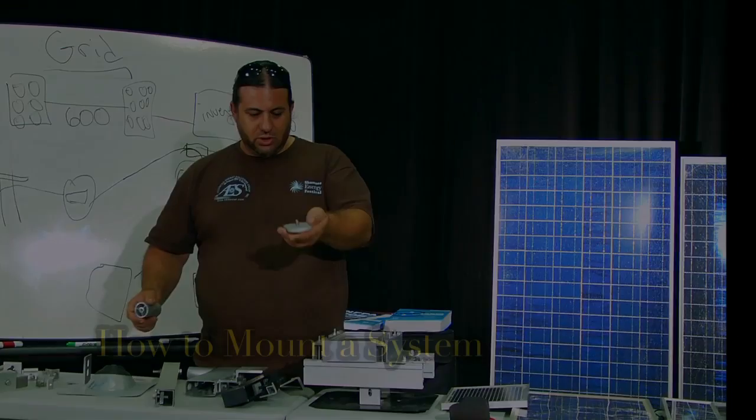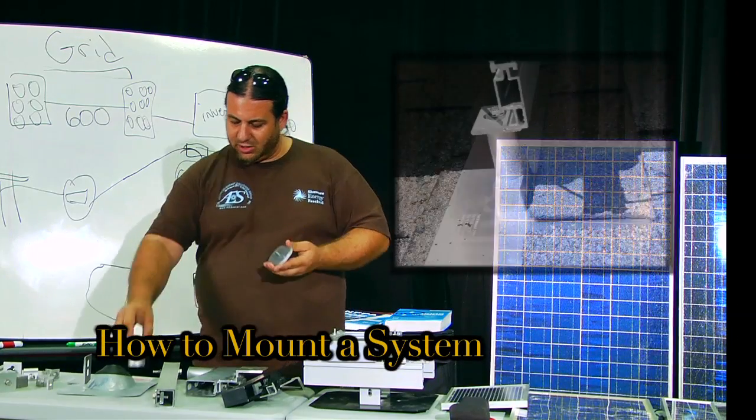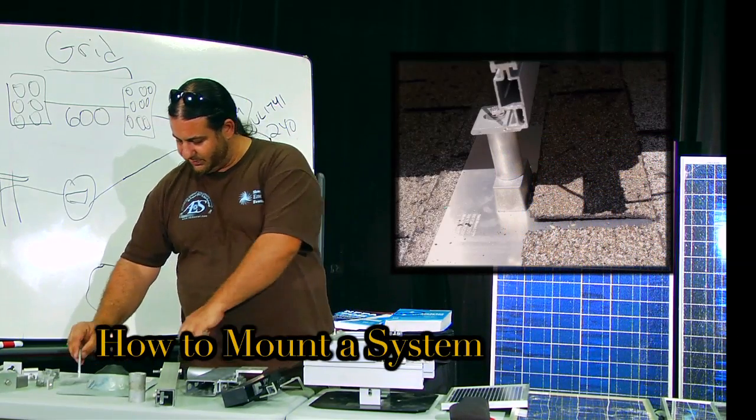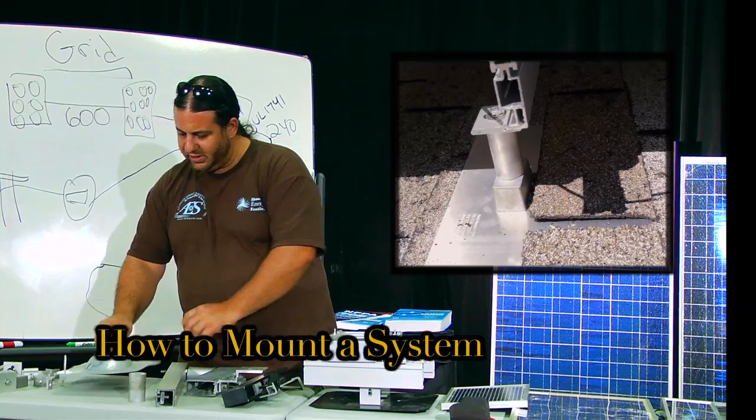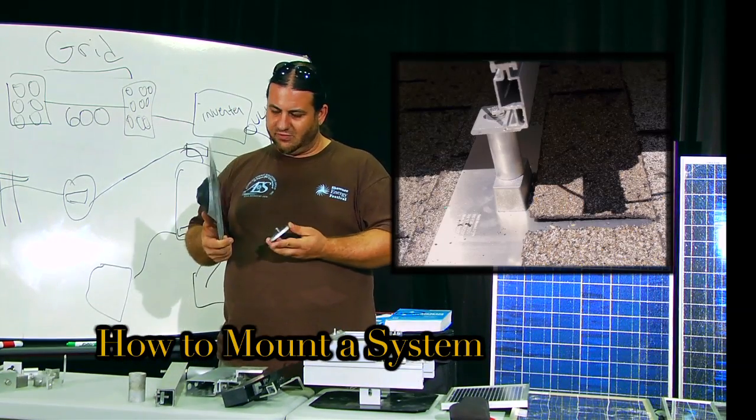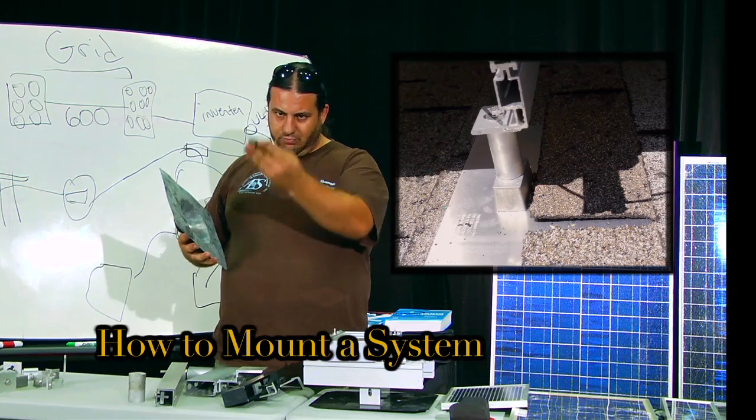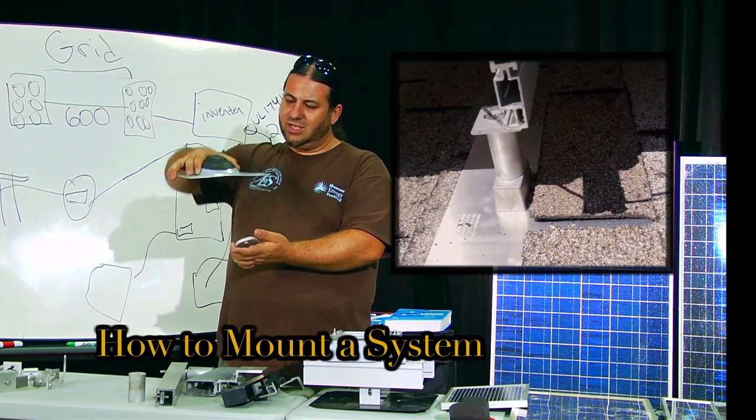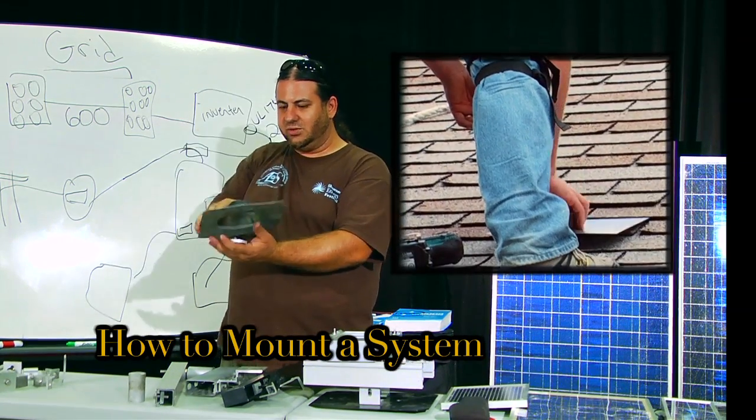The reason why these are two separate parts is you need to flash it. So this is a typical piece of flashing. Why do you want to flash it? To keep it from leaking. So you bolt that to the roof, you get this flashing, and you slide this under the shingle.